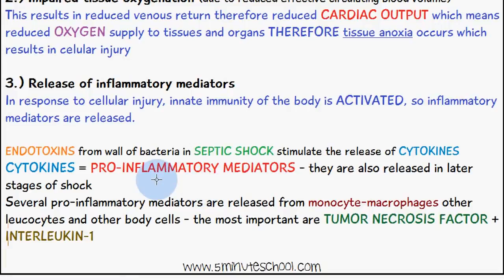Cytokines are pro-inflammatory mediators and they are released in the later stages of shock. Several pro-inflammatory mediators are released from monocyte macrophages, other leukocytes, and other body cells. The most important of these are tumor necrosis factor and interleukin 1.